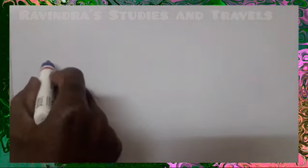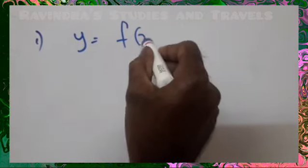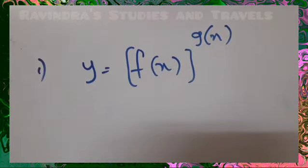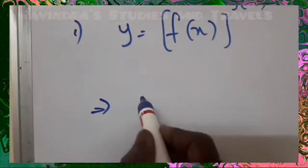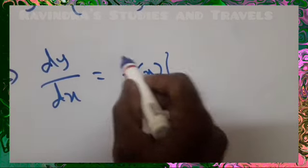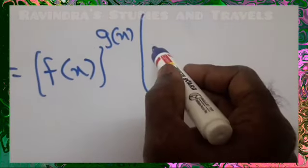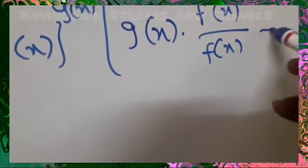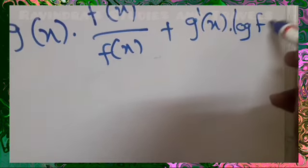Shortcut formula number one in differentiation: If y equals f(x) to the power of g(x), then dy/dx is given by f(x)^g(x) times [g(x) · f'(x)/f(x) + g'(x) · log f(x)].